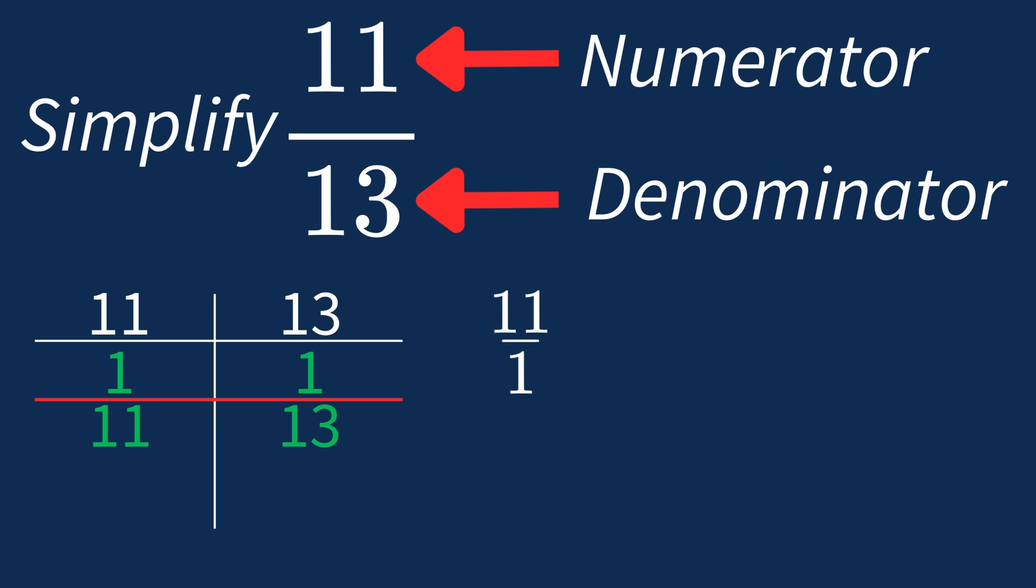Dividing the numerator 11 by 1 gives us 11. Dividing the denominator 13 by 1 gives us 13.